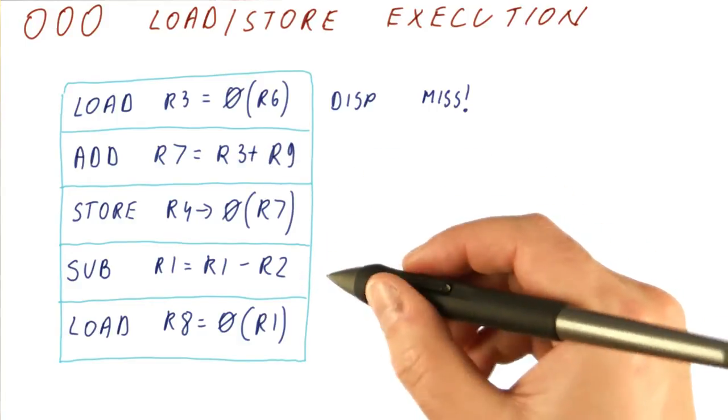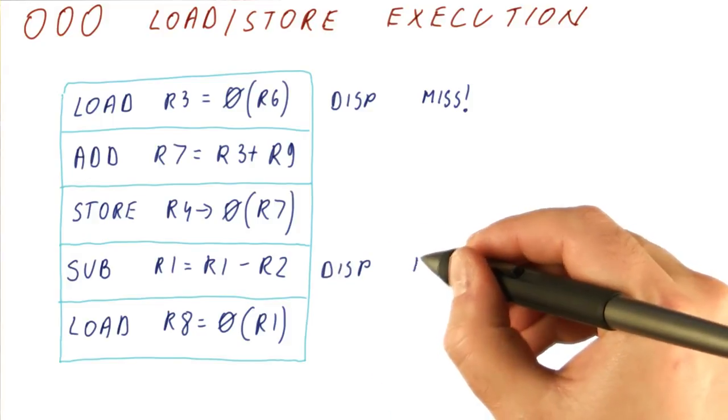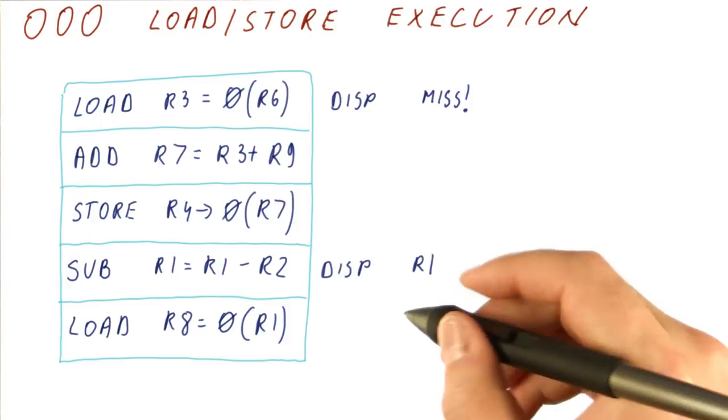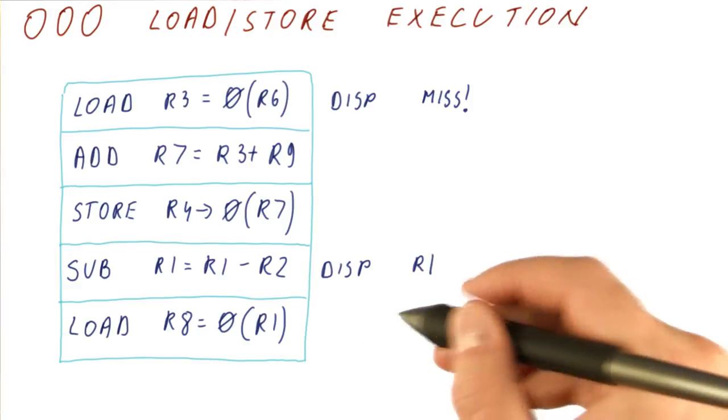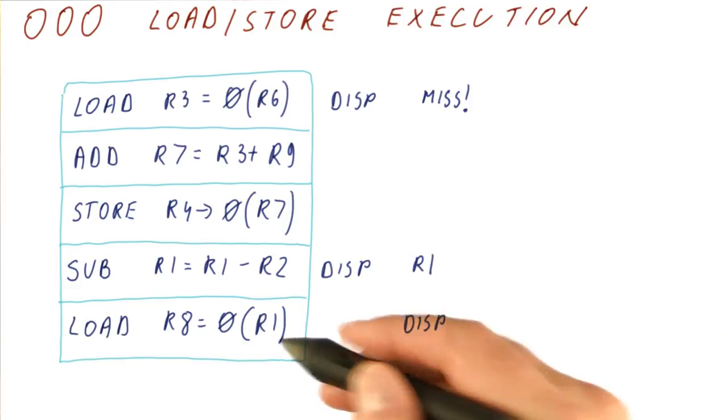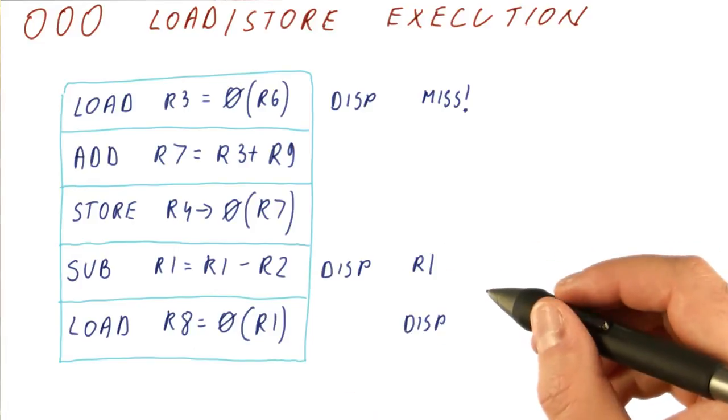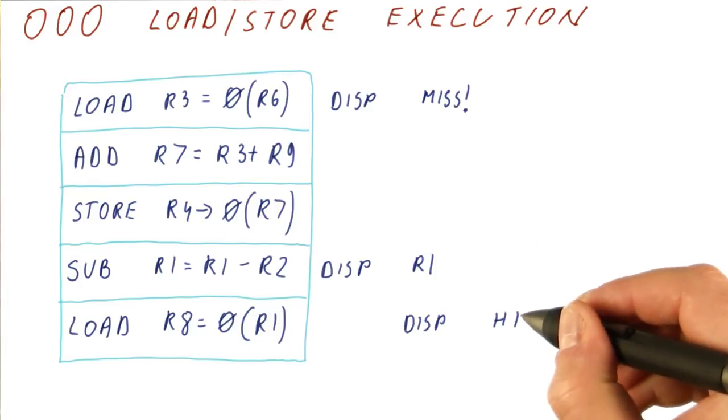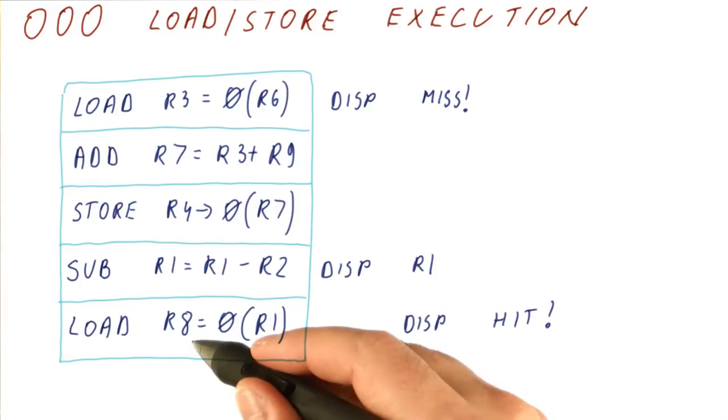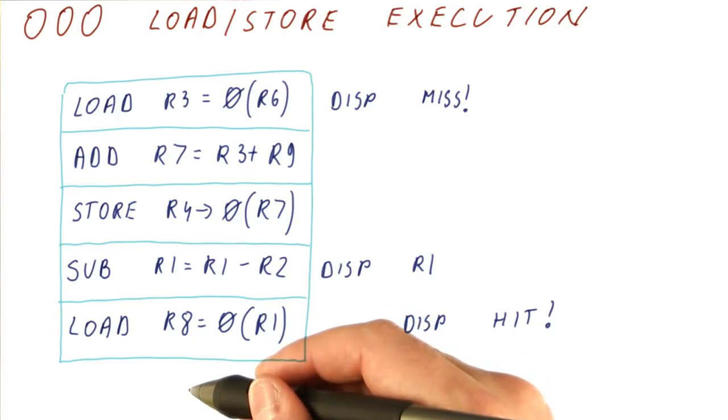Meanwhile, the subtract can dispatch, and it produces R1 very quickly. At that point, the load can dispatch. It has everything it needs to know. It has the address, now it can go to memory and load from it. Let's say that the load is cache hit, so it gets the R8 very quickly and maybe supplies it to subsequent instructions.